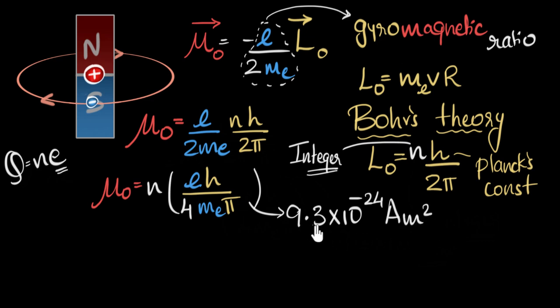So this is the smallest magnetic moment ever, according to Bohr's theory. And we give a symbol for that, we call that μB. We call that Bohr magneton.